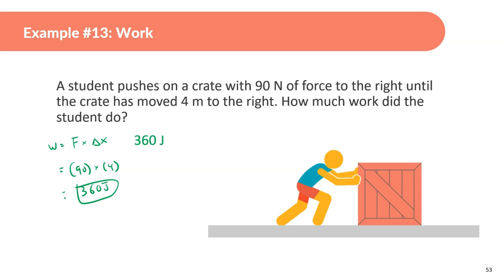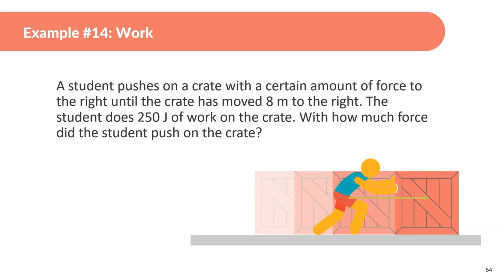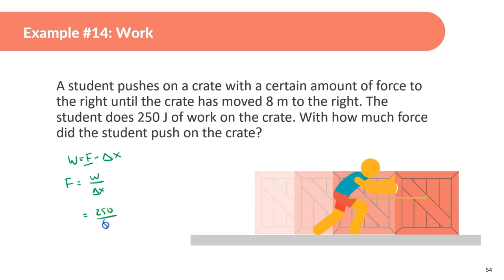A student pushes a crate with a certain force to the right and the crate moves eight meters to the right; the student does 250 joules of work. How much force did the student push with? Work equals force times displacement, so rearranging: force equals work divided by displacement. Force equals 250 divided by 8, which gives 31.25 newtons.